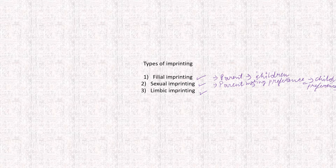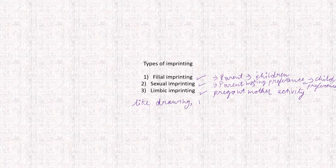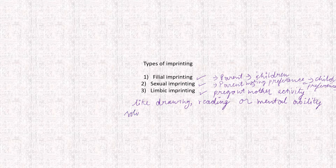Limbic imprinting occurs when a child is in the womb of a pregnant mother. The activities of the pregnant mother — like drawing, reading, solving questions — influence the mental ability and aspects of the child.